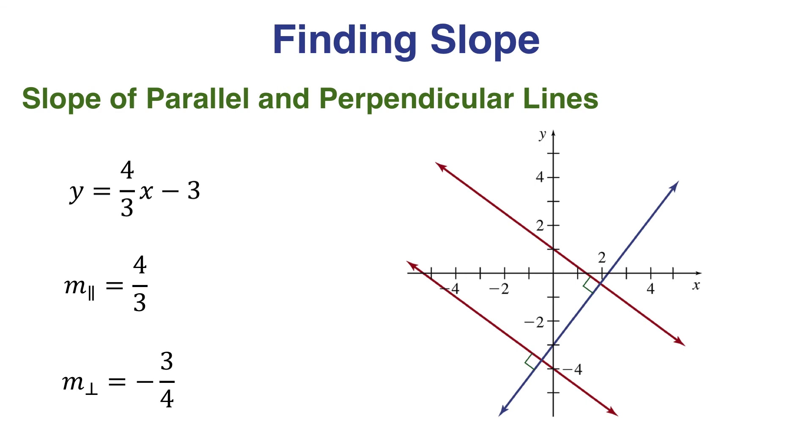Also note, the original line has positive slope, reading left to right it's going up, and that the perpendicular lines have negative slope and going down.